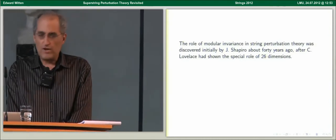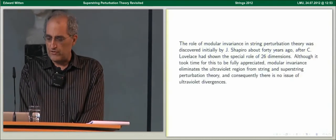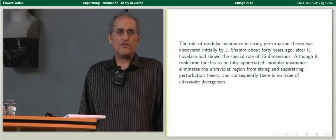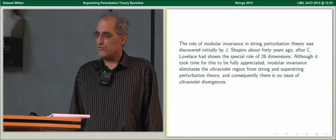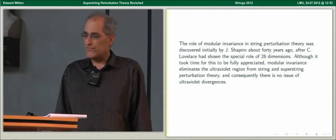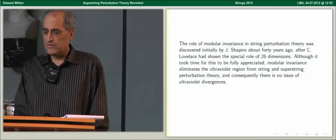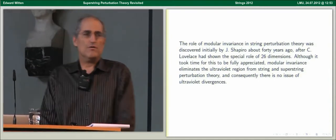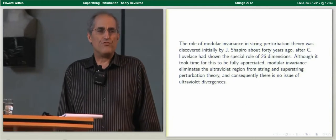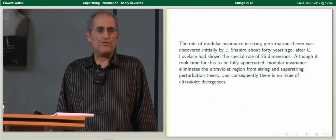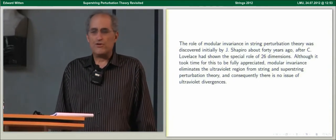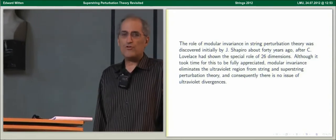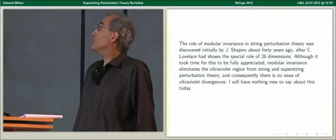We're not going to have anything to say about ultraviolet questions because there aren't any. Modular invariance eliminates the ultraviolet region from superstring perturbation theory, even though people didn't realize this right away. It was another decade after modular invariance was discovered before the first completely consistent one-loop calculations were done by Green, Schwarz, and Brink. But from our perspective now, there are no ultraviolet questions because of modular invariance.